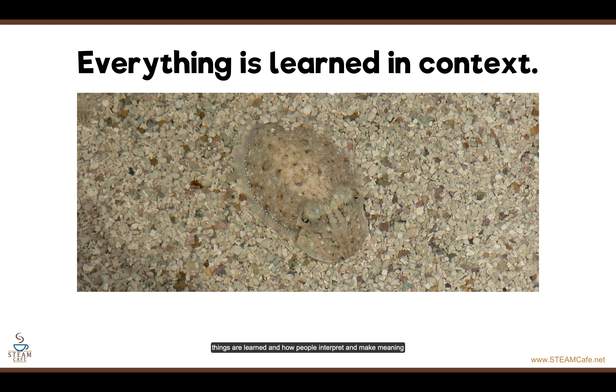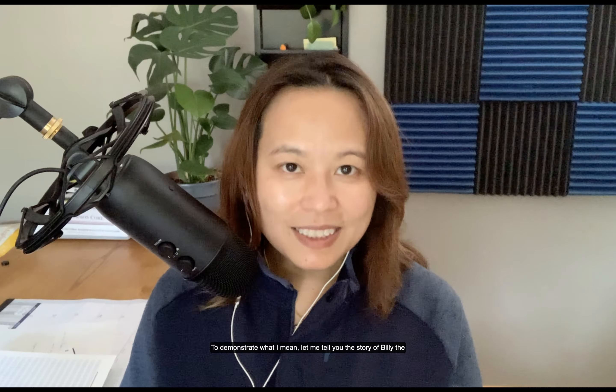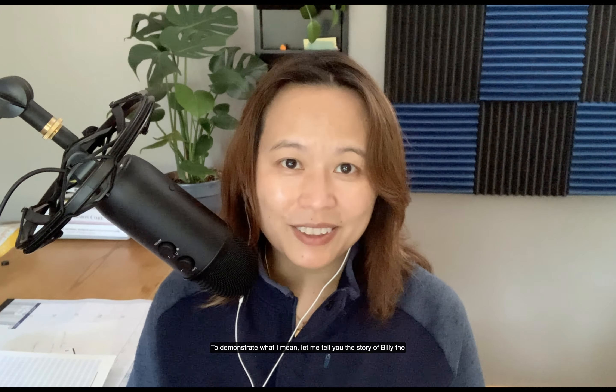Context affects how things are learned and how people interpret and make meaning of the information. To demonstrate what I mean, let me tell you the story of Billy the Kid. When Billy was four years old, both his parents were already dead. His guardian put him on a train to send him to a new home in the country. Young Billy couldn't read or write, nor could he remember his address. So his guardian wrote Billy's name on a tag and secured it around Billy's neck with a string. However, despite the best efforts of the railroad staff, Billy never arrived at his new home.